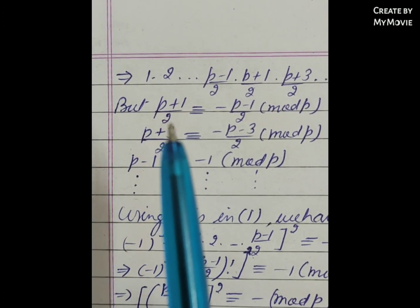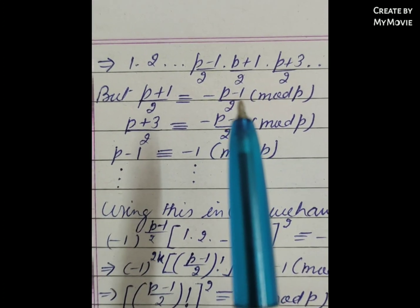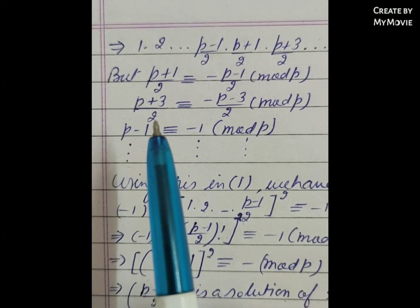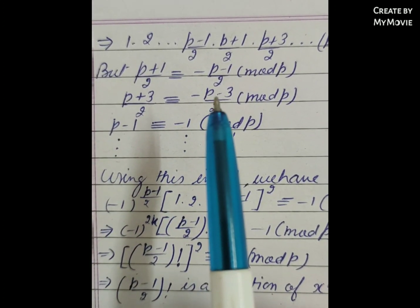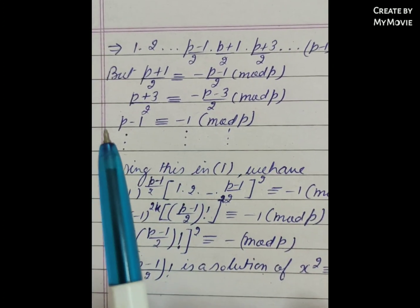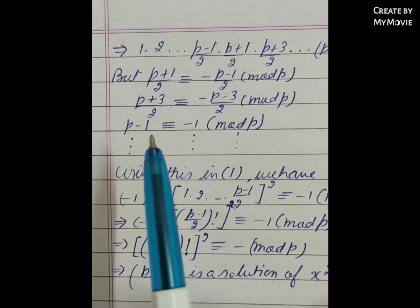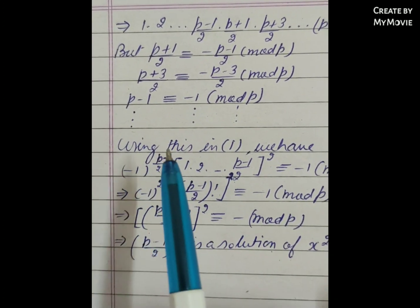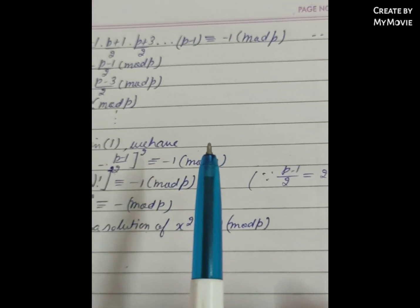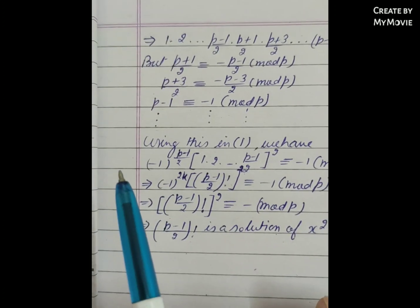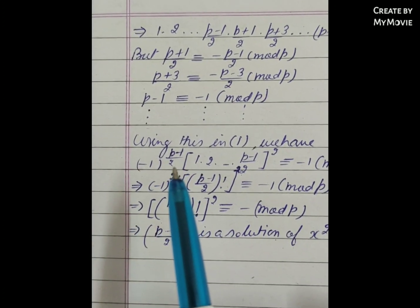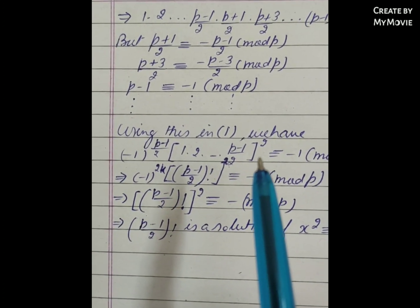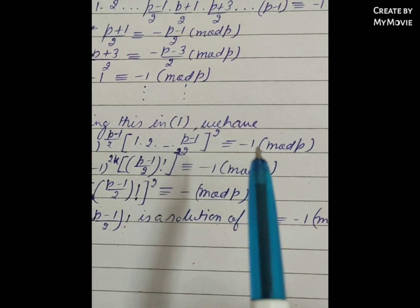Now note that (p+1)/2 ≡ -(p-1)/2 (mod p), and (p+3)/2 ≡ -(p-3)/2 (mod p), and (p-1) ≡ -1 (mod p). Substituting these into equation (1), we get (-1)^((p-1)/2) · [1 · 2 · ... · ((p-1)/2)]² ≡ -1 (mod p).